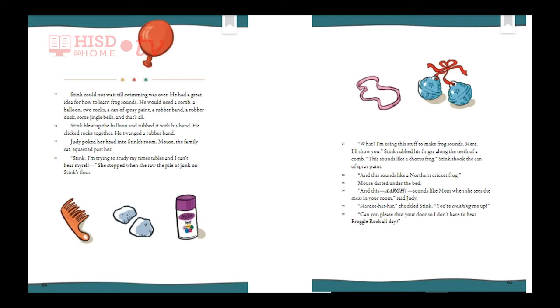'Stink, I'm trying to study my times table and I can't hear myself,' said Judy. She stopped when she saw the pile of junk on Stink's floor. 'I'm using this stuff to make frog sounds — here, I'll show you.' Stink rubbed his finger along the teeth of the comb. 'This sounds like a chorus frog.' He shook the can of spray paint. 'And this sounds like a northern cricket frog.' Mouse darted under the bed. 'And this sounds like mom when she sees this mess on your floor,' said Judy. 'You're croaking me up,' chuckled Stink.